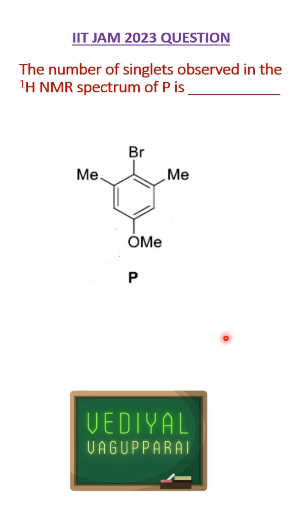So first and foremost, we must find the number of signals in this particular molecule. So we see here there are two methyl groups. The two methyl groups are in the same environment, so they contribute to one signal.